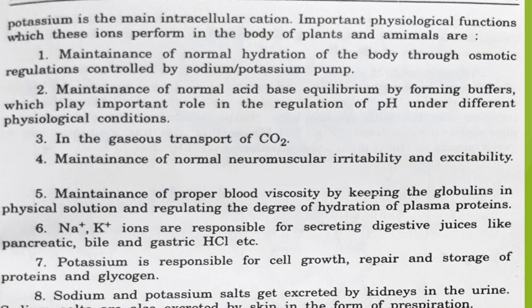Alkali metal ions are weak Lewis acids and form weak complexes. The encapsulation of a cation by crown ethers is selective depending upon cation size, giving them a role in antibiotic function. Both sodium and potassium chloride are excreted mainly by the kidneys in urine, to a lesser extent by the skin through perspiration, and in small amounts by the gastrointestinal tract in digestive fluids. Potassium is excreted almost entirely by the kidneys under normal physiological conditions.